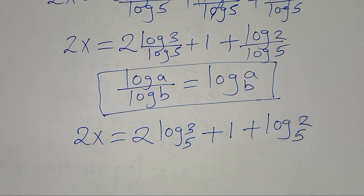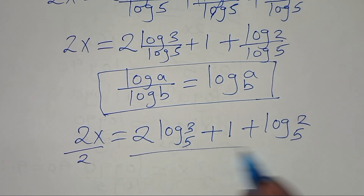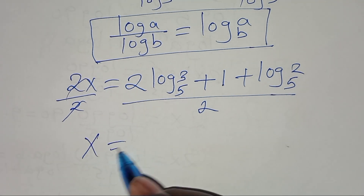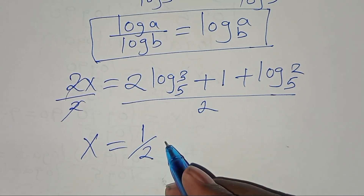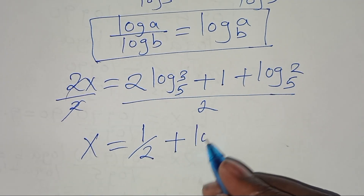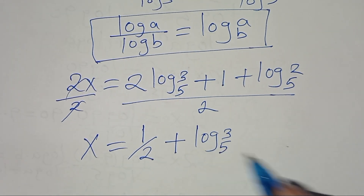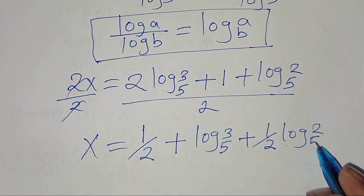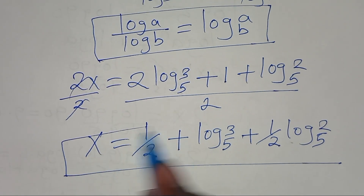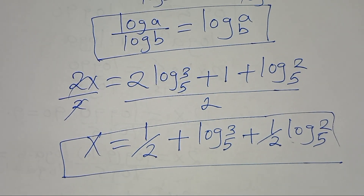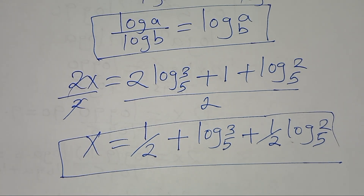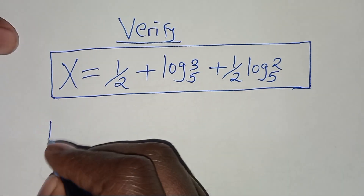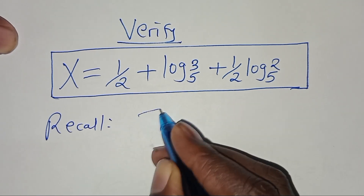The next step: dividing both sides by 2, we have x equal to 1/2 plus log base 5 of 3, plus 1/2 log base 5 of 2.